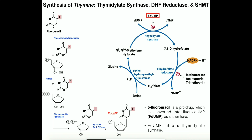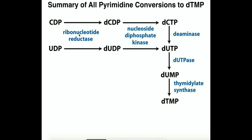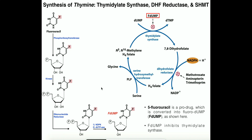Next we need the triphosphate form: fluorodeoxy-UDP reacts with NDPK, which adds a third phosphate, and then DUTPase processes it — following the same series of enzymes in the pathway. This ultimately gives the active form of the drug, fluorodeoxy-UMP. I won't show you the full mechanism of how it acts as a suicide inhibitor of thymidylate synthase, but basically this molecule looks almost exactly like DUMP from the perspective of the enzyme.